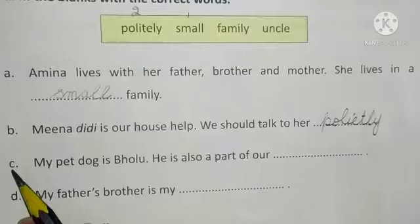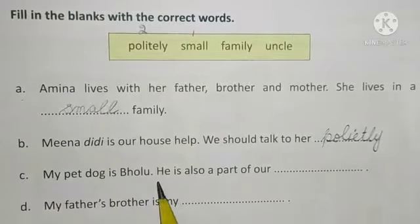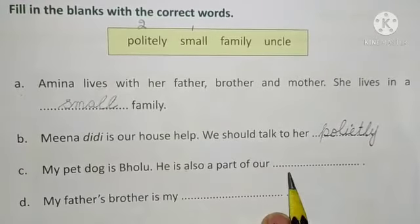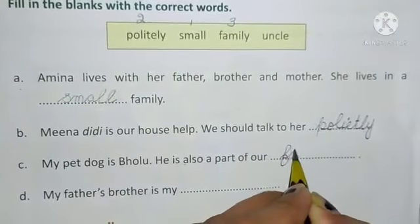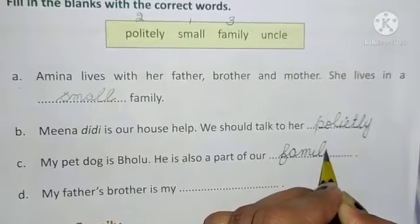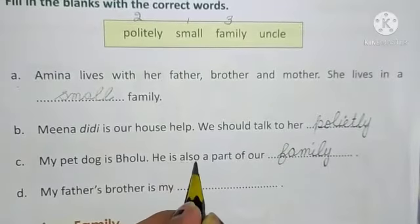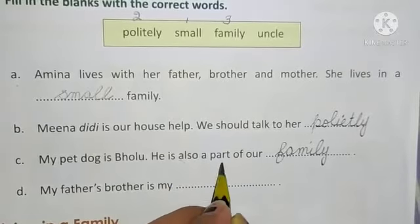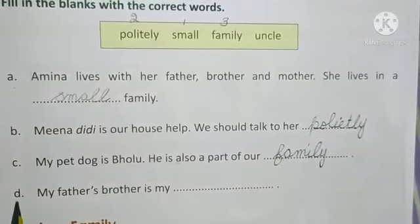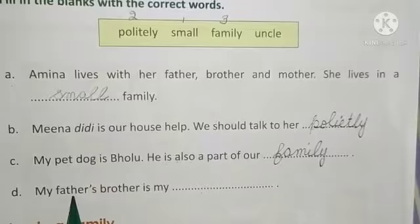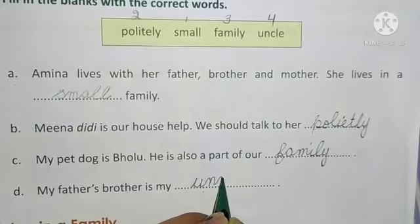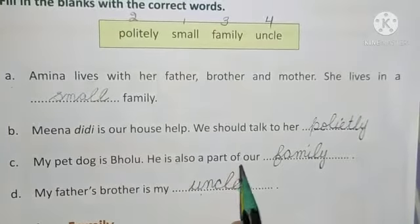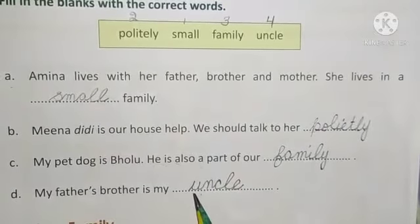Number C — my pet dog is Bholu. He is also a part of our dash. So we will write family. He is also a part of our family. Number D — my father's brother is my dash. Yes, our father's brother is called uncle. So we will write uncle — U-N-C-L-E. Now do this work on your EBS course books.